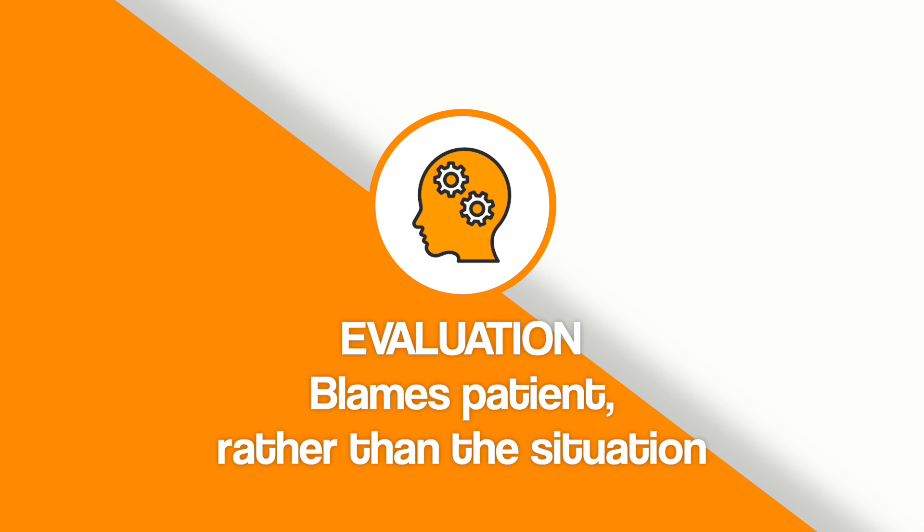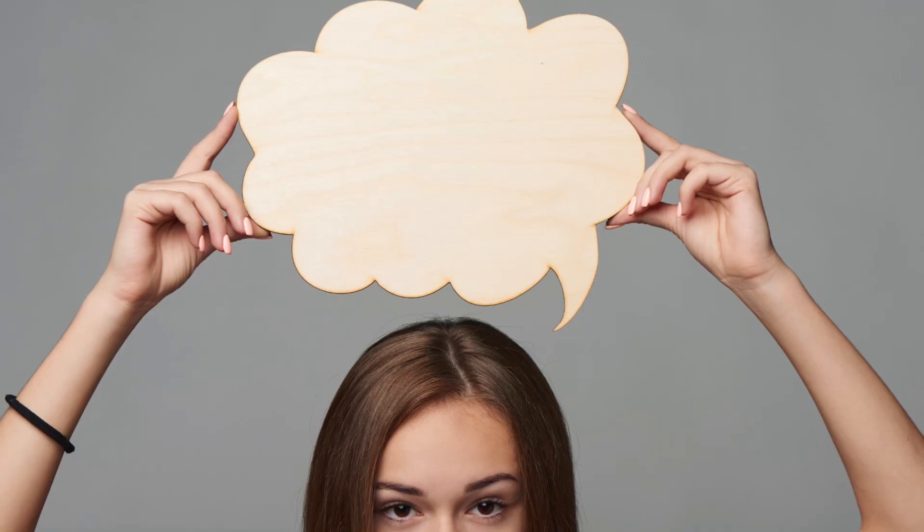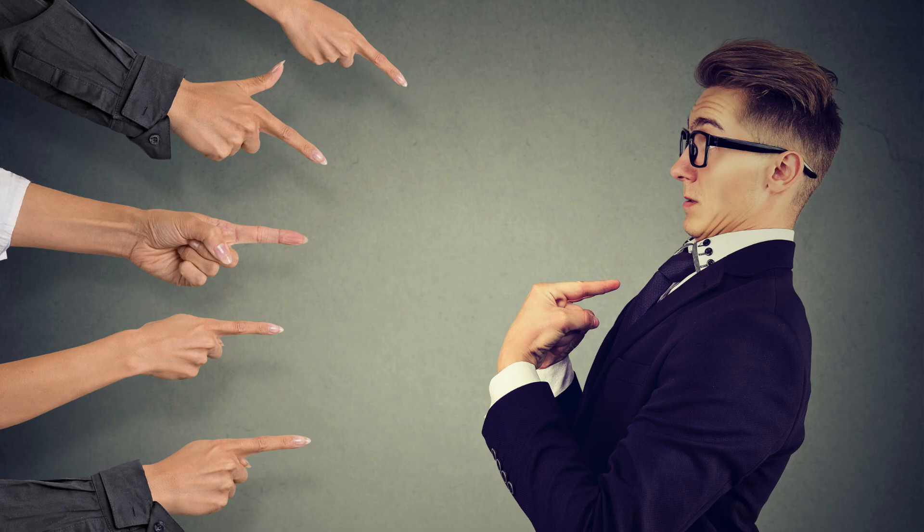However, one of the main limitations of the cognitive explanation of depression is that it could be argued that it blames the patient rather than the situation. Because the focus is on a person's thoughts, the cause of depression is placed on the person themselves. By blaming the person, this could miss important situational factors and potentially make things worse. For example, if someone is depressed because they are suffering at home due to domestic abuse, telling them they need to change the way they think isn't going to help much — what they really need is to get out of that situation.